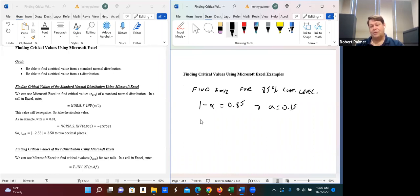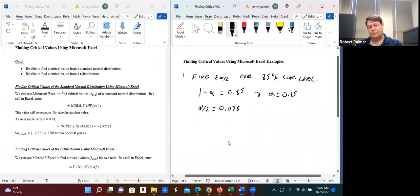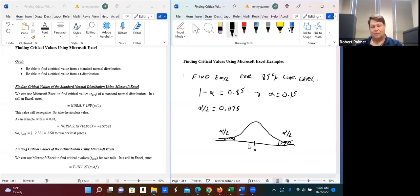So then first, we divide that by 2. So alpha divided by 2, and that's going to be 0.075. And then that's what we're going to enter. So remember, think about a standard normal distribution. Right here is our mean in the middle, which is 0. So what we're finding is we're dividing our alpha into two parts. This part over here, this is alpha over 2, and also this is also alpha over 2.